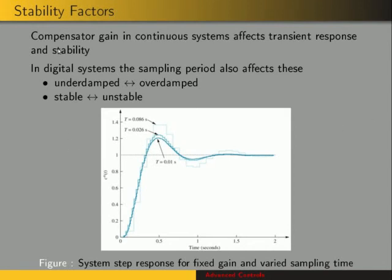Whenever we're dealing with continuous systems the compensator gain would affect the transient response and stability. Now that we're in the z-plane, the gain and also the sampling period affects the response and stability — whether it's under-damped or over-damped, or stable or unstable. Here's a figure showing a discrete system step response for different sampling times: the largest sampling time, a smaller one, and a smaller one still.